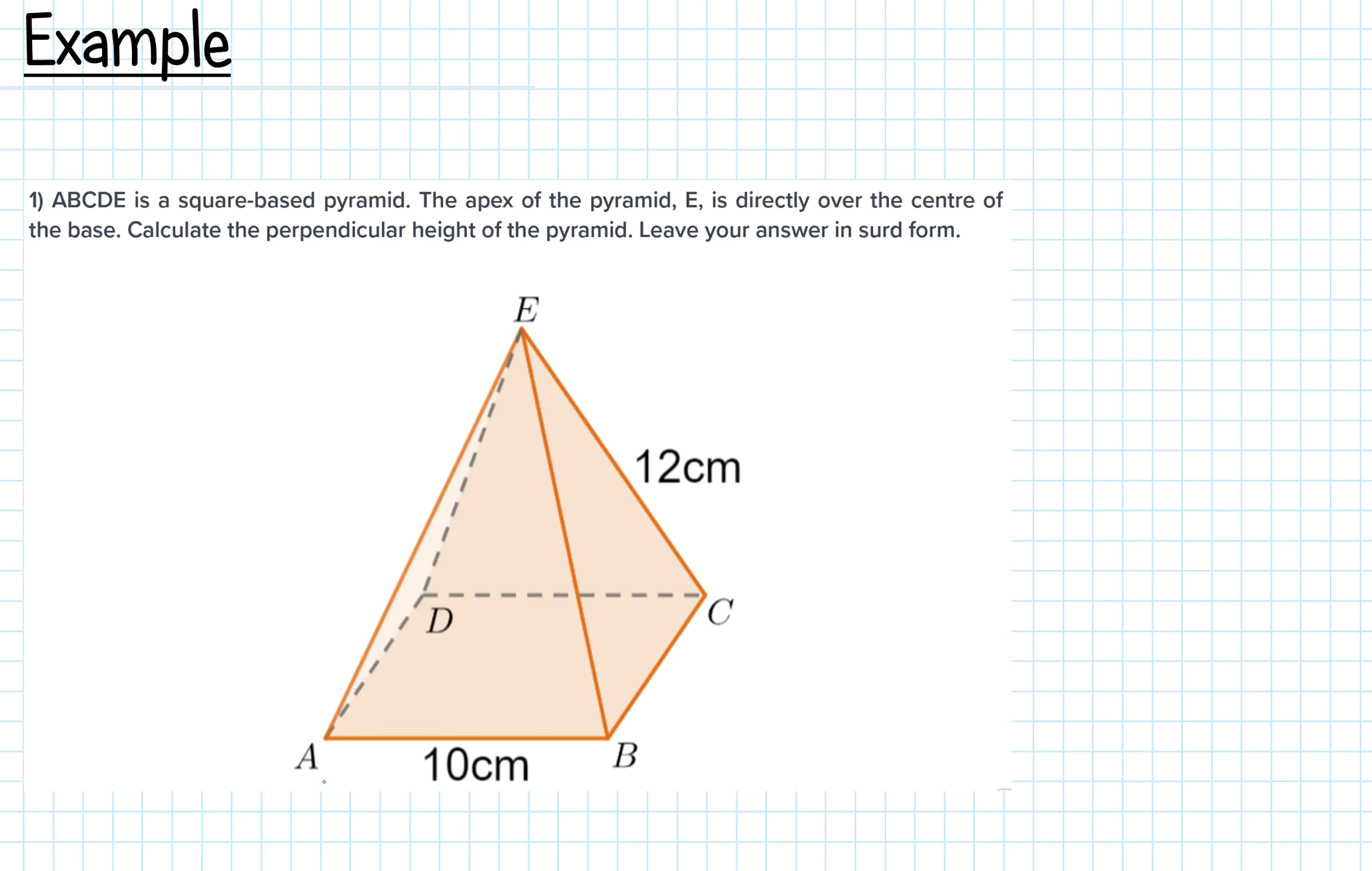In this question, you're asked to find the perpendicular height of a square-based pyramid where the apex E is directly over the center of the base.